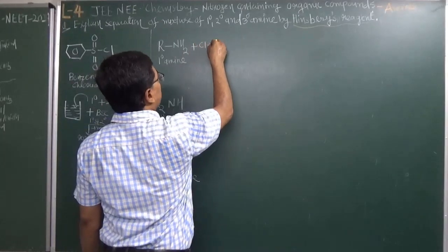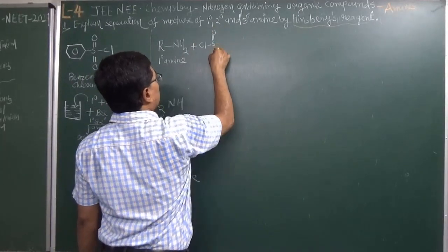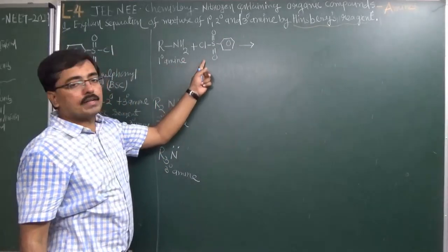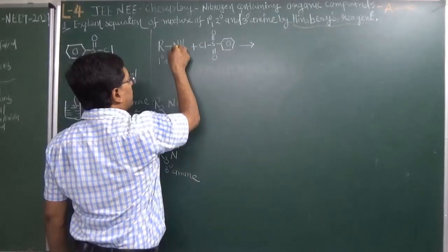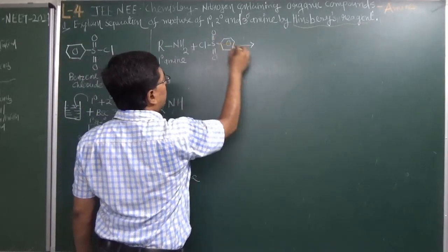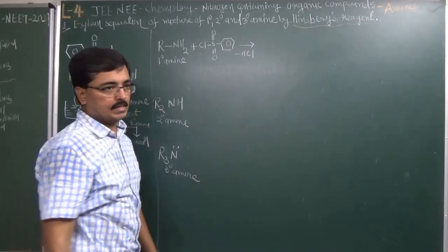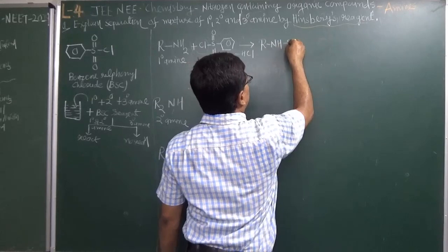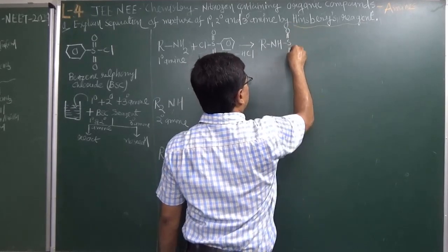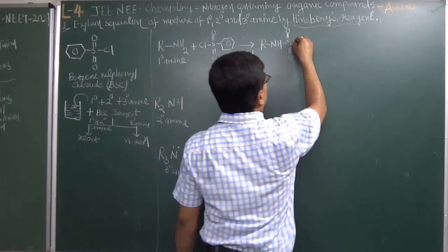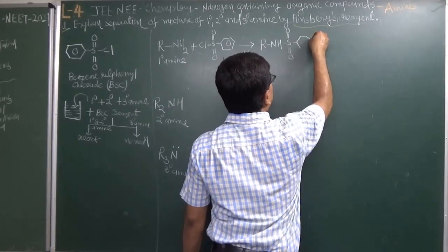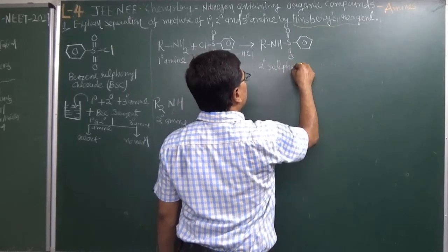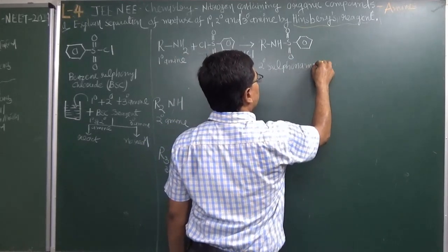When we add benzene sulfonyl chloride, Primary Amine reacts and gives a secondary sulfonyl amide. The hydrogen from the amine and chlorine from BSC are removed as HCl, and as a result we get the structure R-NH bonded to the sulfonyl group — this is known as secondary sulfonyl amide.